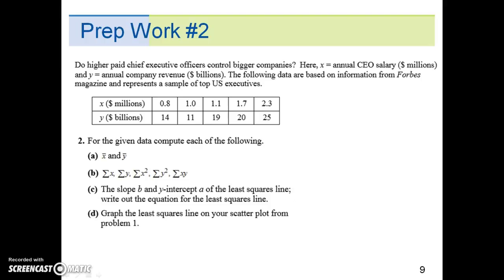Part C: the slope b and y-intercept a of the least squares line. Write out the equation for the least squares line. So the slope b is a matter of plugging information into the formula. Same thing for the y-intercept a. And then the equation for the least squares line is going to be y-hat equals a plus bx. And then part 4: graph the least squares line on your scatter plot from problem 1. So this prep work number 1, 2, 3, and 4 all uses the same data set. Give it a try, click pause here. Once you've tried it out, go to the next slide for the solution.